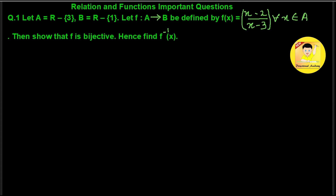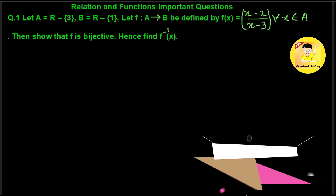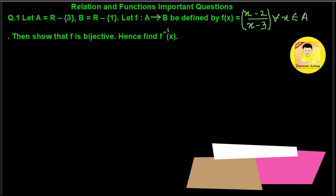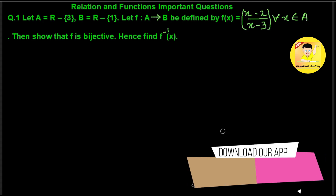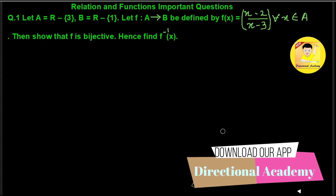Let A be equal to R minus 3, B be equal to R minus 1. Let f map A to B, defined by f(x) = (x-2)/(x-3), such that x belongs to A. We have to show that f is bijective, and hence find f inverse of x. Let us see the solution.